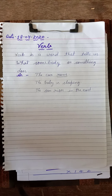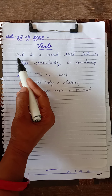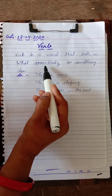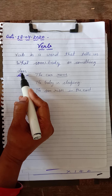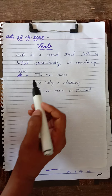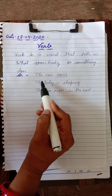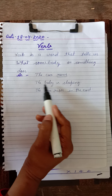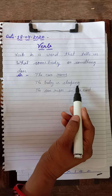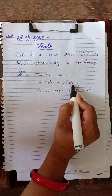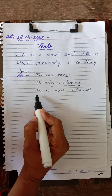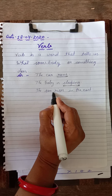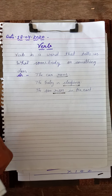So the definition of verb is: a verb is a word that tells us what somebody or something does. For example, 'The car runs' — here 'runs' is the verb. 'The baby is sleeping' — 'sleeping' is the verb. 'The sun rises in the east' — 'rises' is the verb.